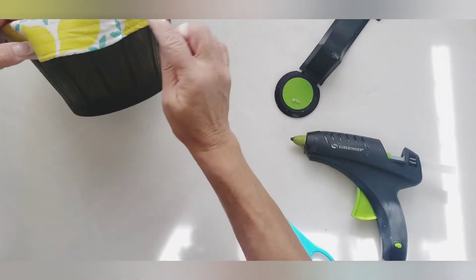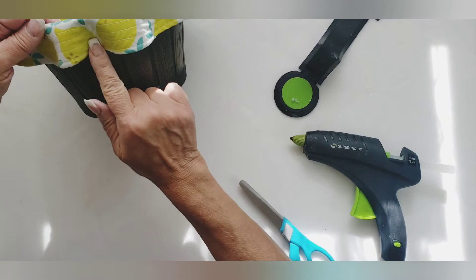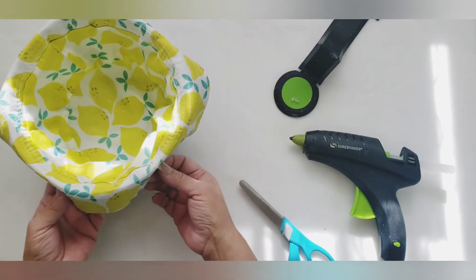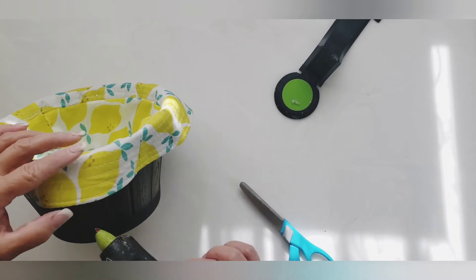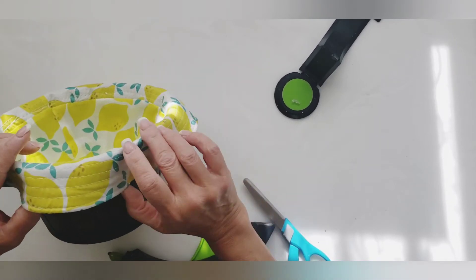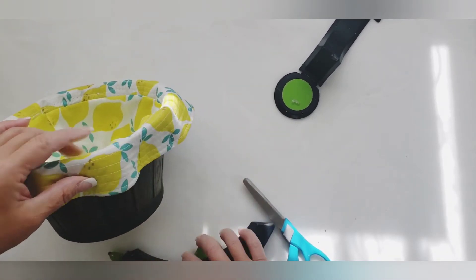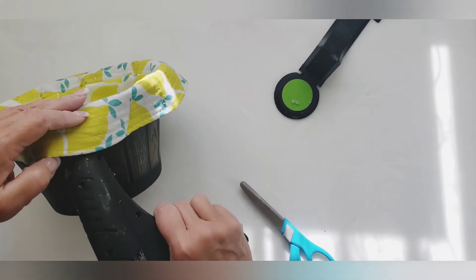So here I'm just going to tack it down right in the middle of each glue spot, and that's going to create that ruffle look. So I'm just trying to be very careful and get it as even as I can.